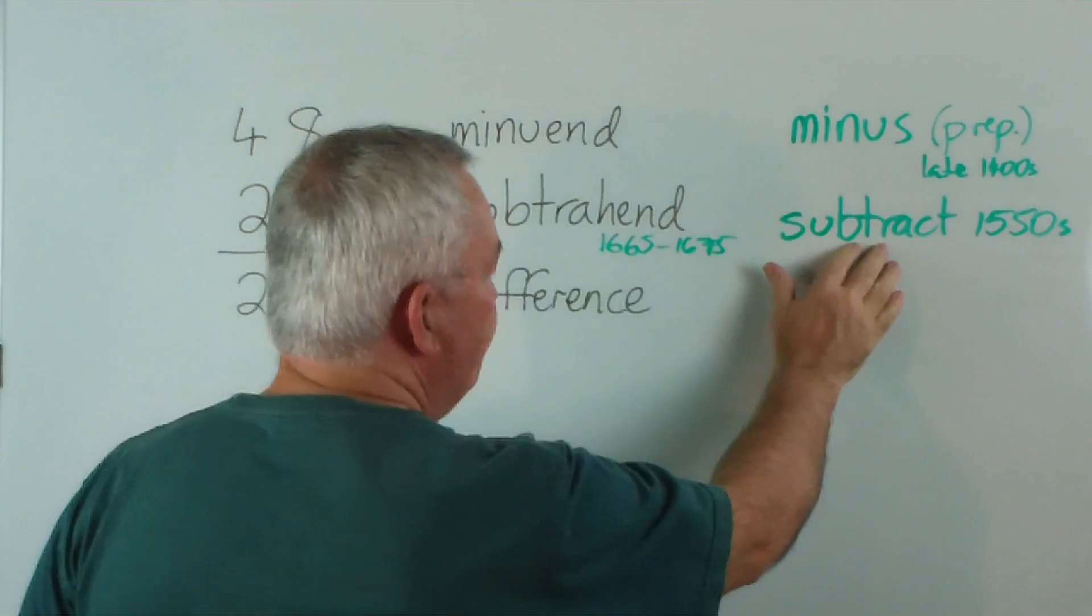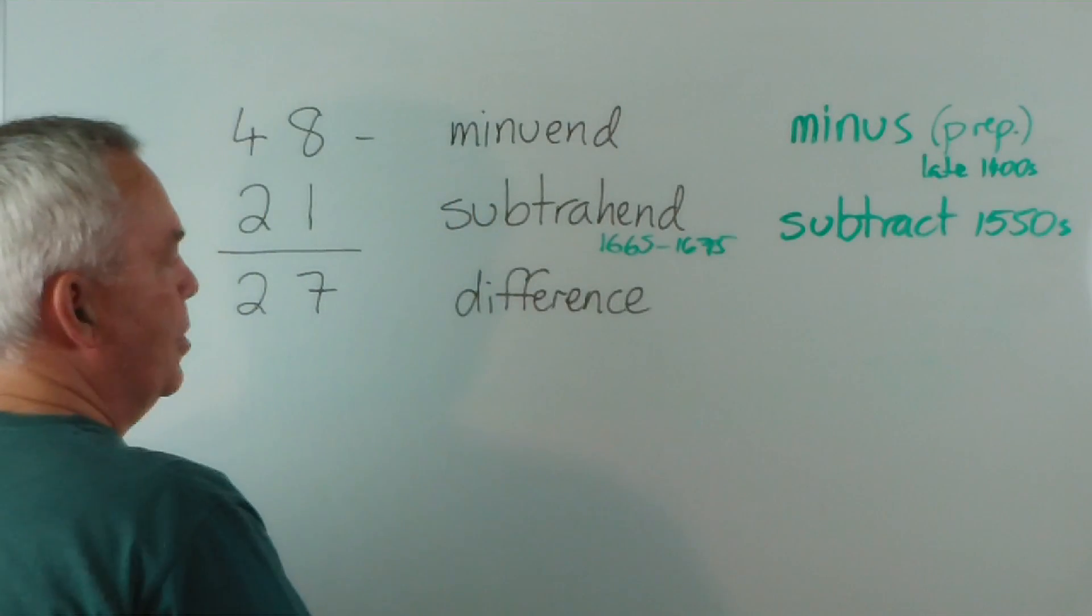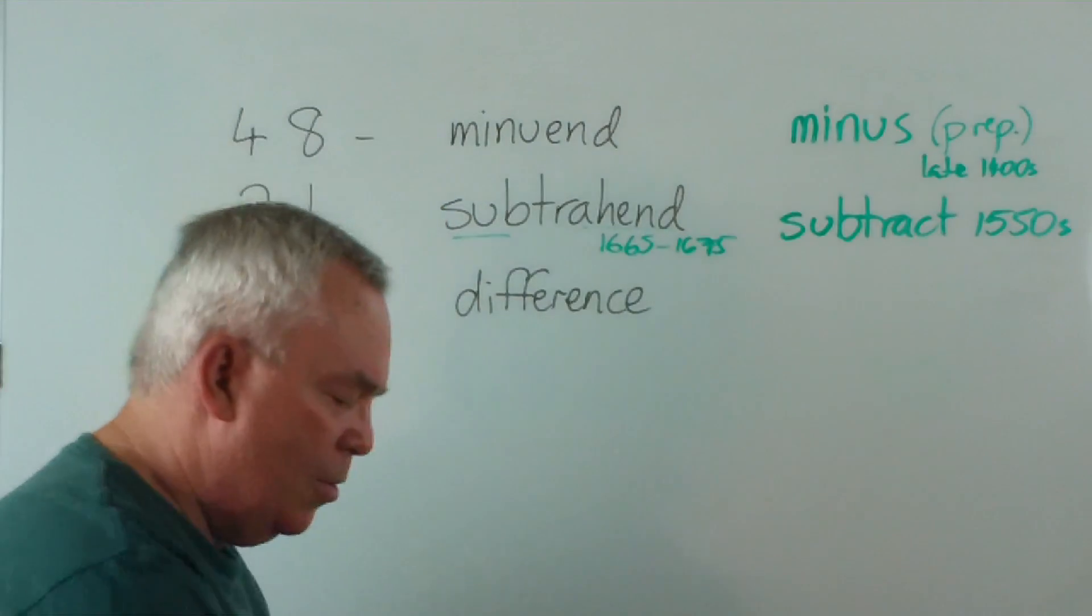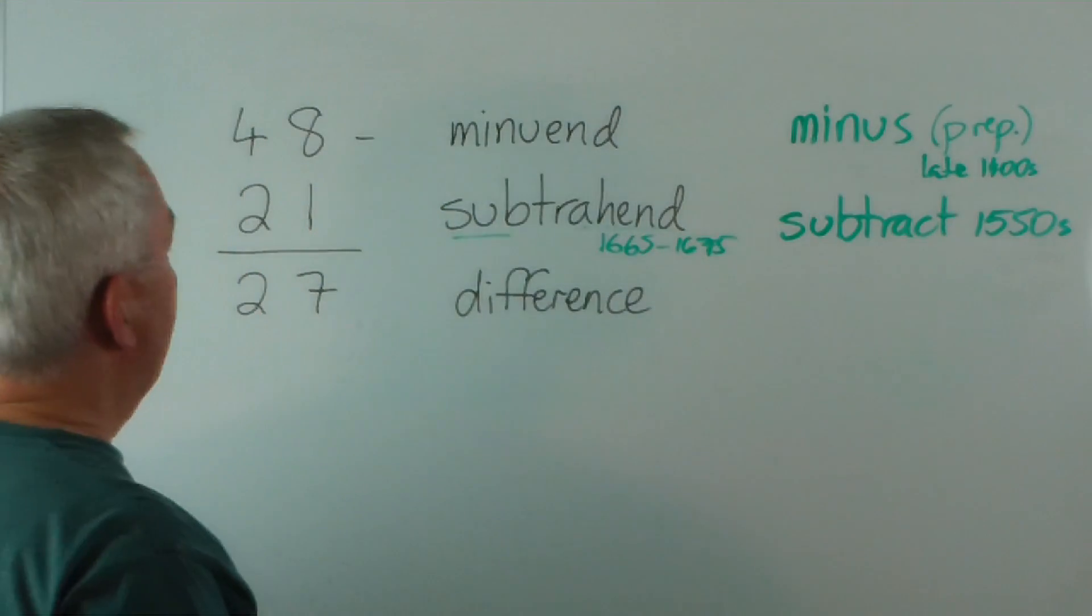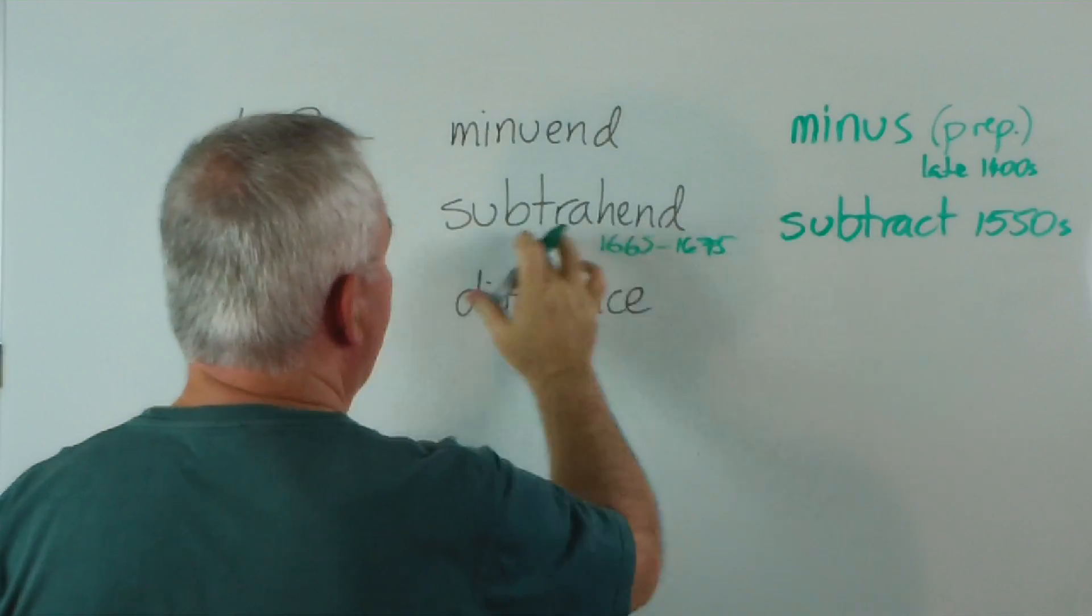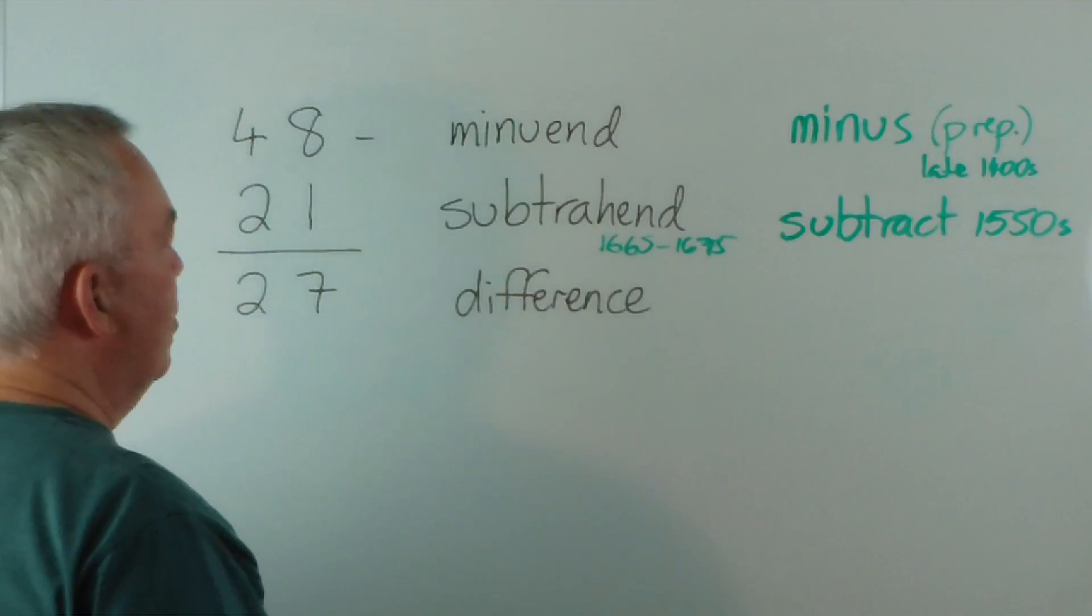And it comes from the same origins of subtract. Sub underneath and the hend bit to remove from underneath. So there it is. The subtrahend is the number that's being removed from underneath. It's being taken away.